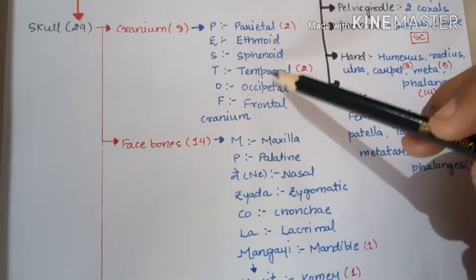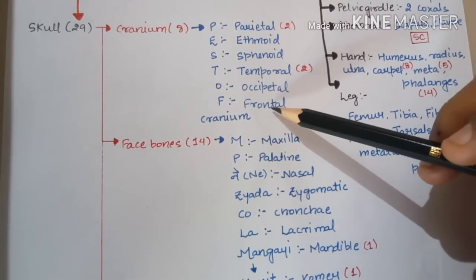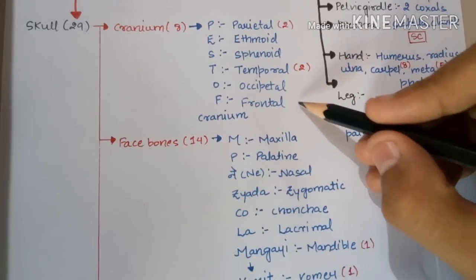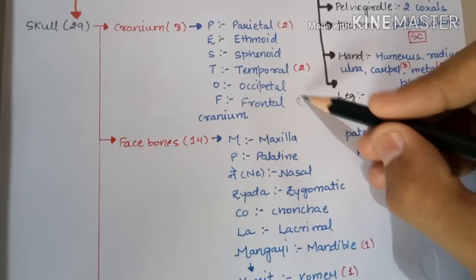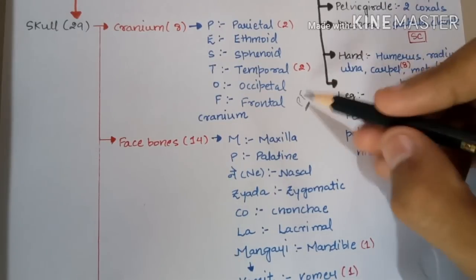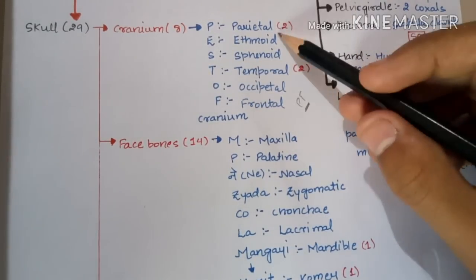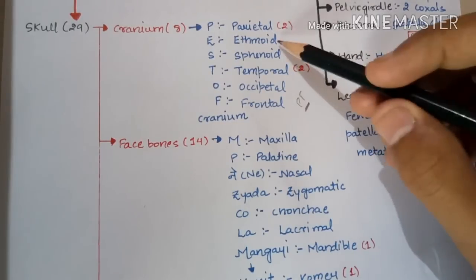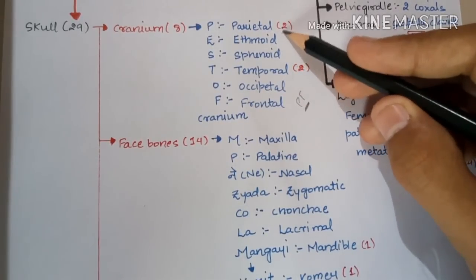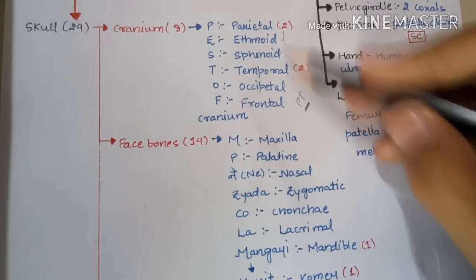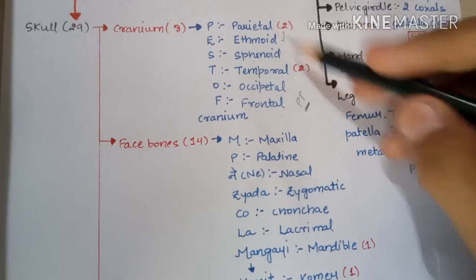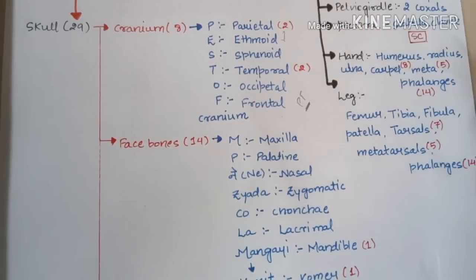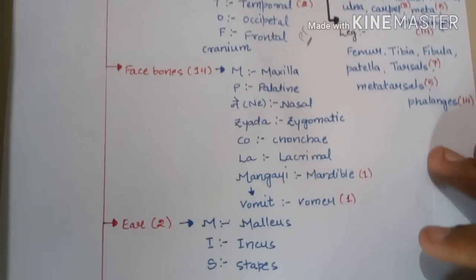Among the cranium bones — Parietal, Ethmoid, Sphenoid, Temporal, Occipital, Frontal — the ones that are P and T, i.e., Parietal and Temporal, are two in number. All other bones are single in number, that is one. Parietal and Temporal are two in number each. Next, let's talk about the facial bones.